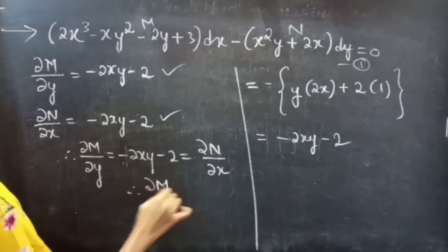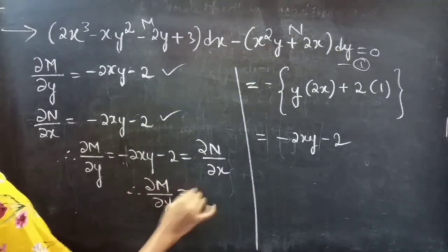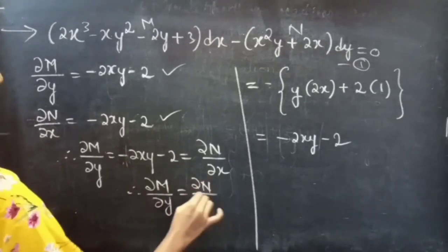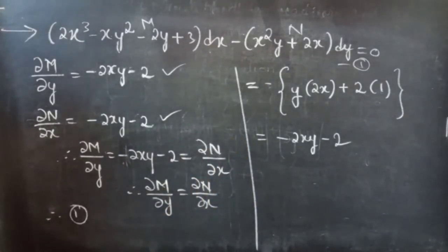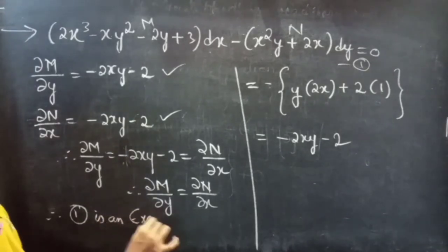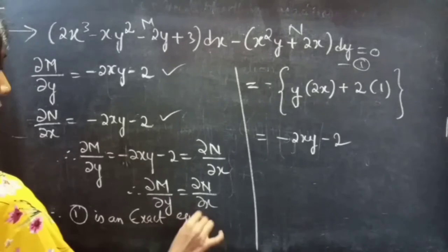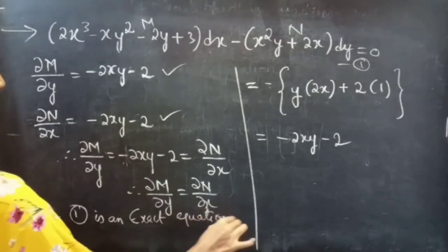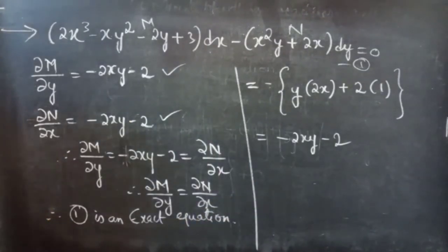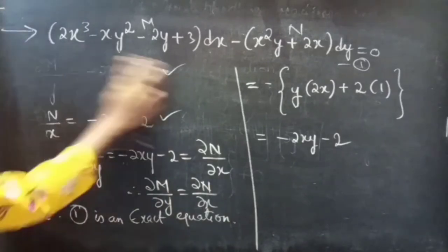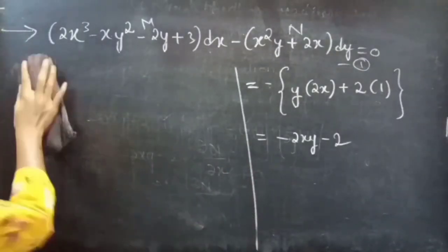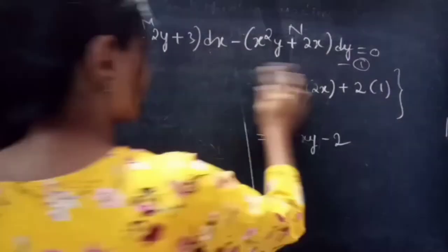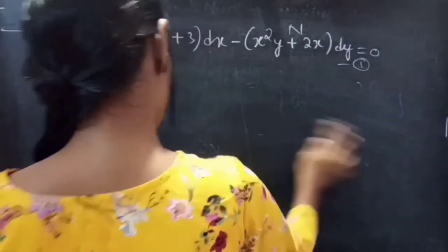Therefore, ∂M/∂y = -2xy - 2 = ∂N/∂x. Since ∂M/∂y = ∂N/∂x, from this we can say that equation 1 is an exact equation. Since the given equation is an exact equation, we can find the general solution.